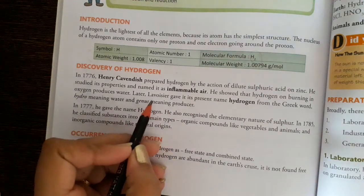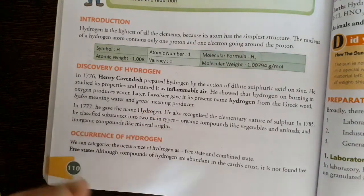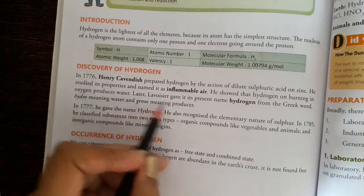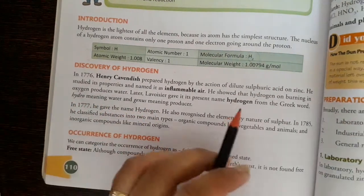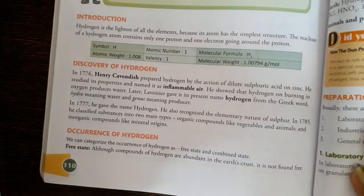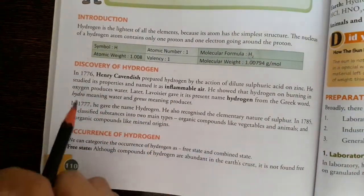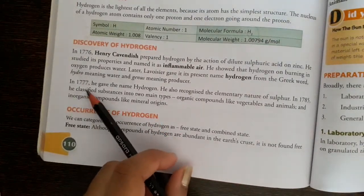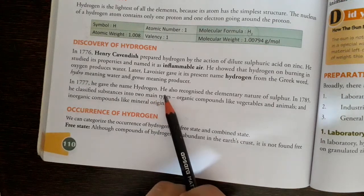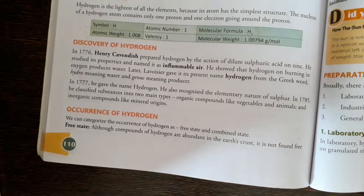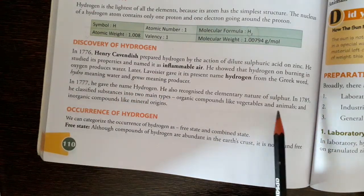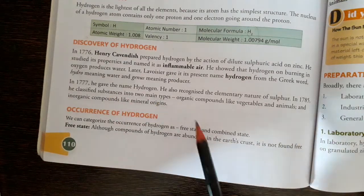Another scientist, Lavoisier, named it hydrogen from the Greek word hydro, which means water, and genes means producer - water producer. After this, Henry had initially named it inflammable air. In 1777, he gave the name hydrogen. He also recognized the elementary nature of sulfur. In 1785, he classified substances into two main groups: organic compounds like vegetables and animals, and inorganic compounds like minerals.